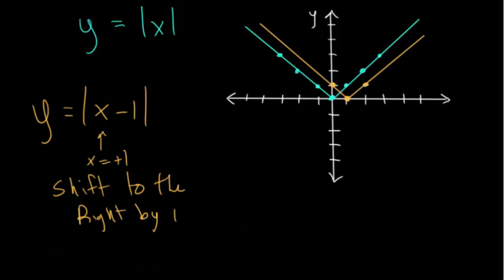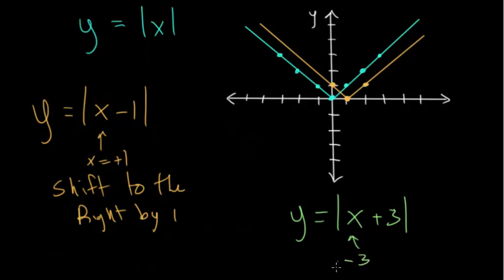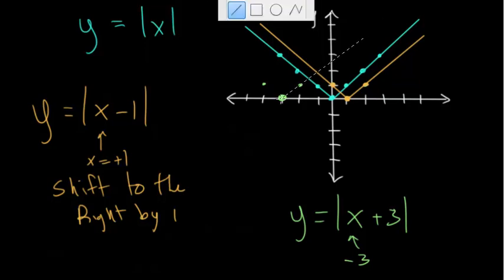Likewise, if we want to shift to the left using y equals the absolute value of x plus three (in green), think about which x value makes the expression equal to zero — that's negative three. So we shift left three units. The vertex corner shifts to the left three units. Plugging in negative two gives the absolute value of one, which is one; plugging in negative four gives the absolute value of negative one, which is also one. You get the same cone shape.